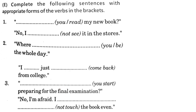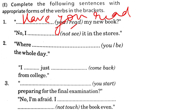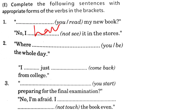Complete the following sentences with appropriate forms of the verbs in the brackets. As we are attempting present perfect tense assignments, we need to be sure about the structure. The answers are: 'Have you read my new book?' 'No, I have not seen it in the stores.' 'Seen' is the third form of 'see'. 'I have not seen it in the stores. Where have you been the whole day?'